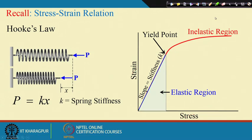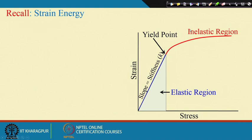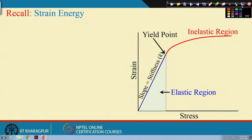Next is strain energy. Considering only the elastic region of the stress-strain diagram, the strain energy is essentially the area under the curve — the elastic strain energy.